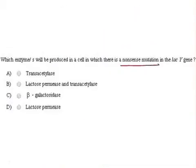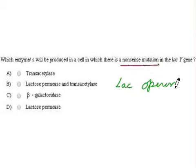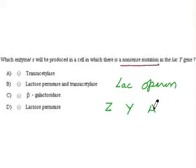In the question, the enzymes given are related to the lac operon. In the lac operon, the structural genes are Z, Y, and A. The question asks what happens if a nonsense codon is formed at the Y gene.